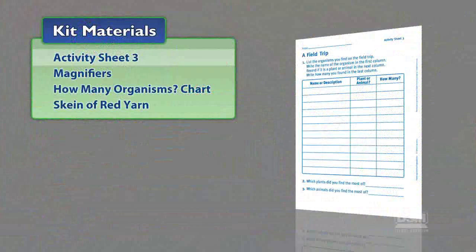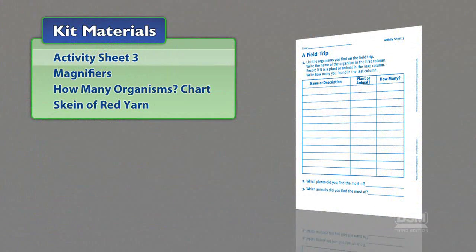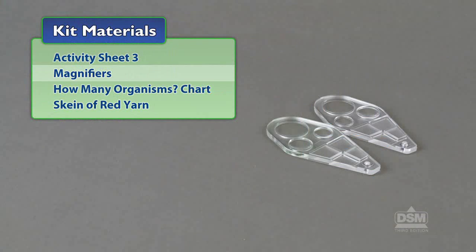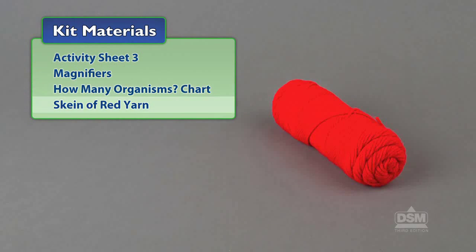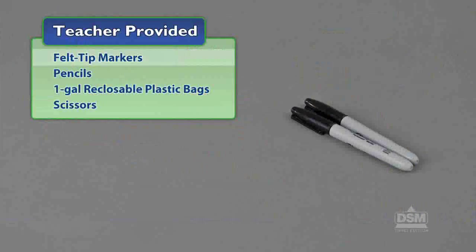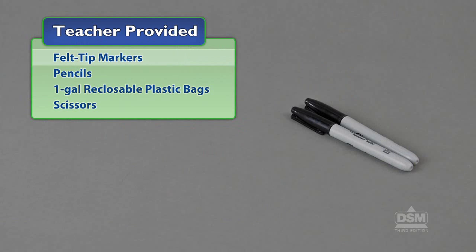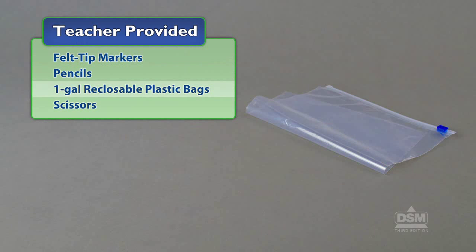You will need the following materials from the kit: Activity Sheet 3, magnifiers, a How Many Organisms chart, and a skein of red yarn. You will also need to provide felt tip markers, pencils, one gallon reclosable plastic bags, and scissors.